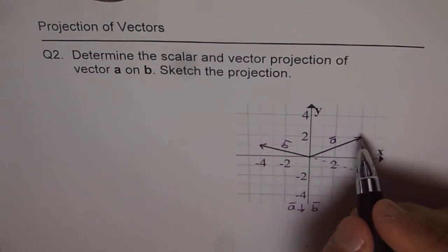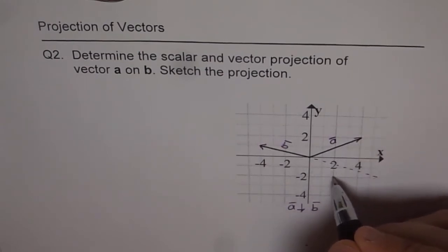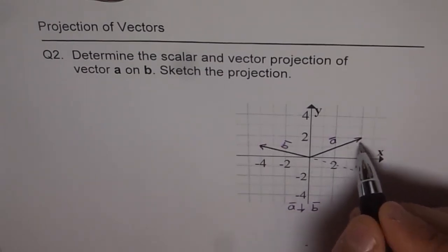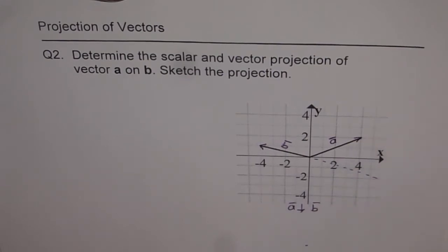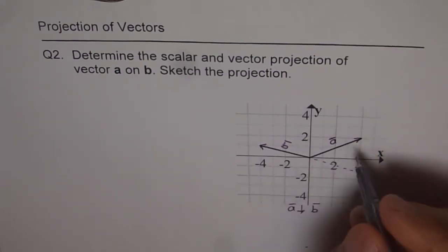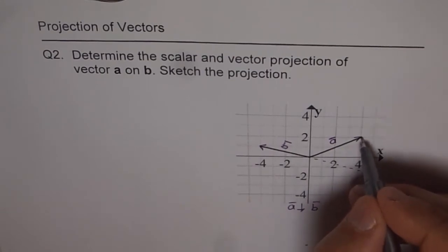And then what I need to do is I need to drop a perpendicular from this point on this line. And that perpendicular is going to give me a point on the line.